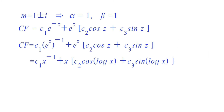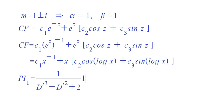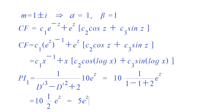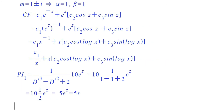Now we find Particular Integral 1: PI₁ = 1/(D'³ − D'² + 2) times 10·e^z. The coefficient of z in e^z is 1, so replace D' with 1: denominator becomes 1³ − 1² + 2 = 2. So PI₁ = (10/2)·e^z = 5·e^z. Since e^z = x, Particular Integral 1 equals 5x.